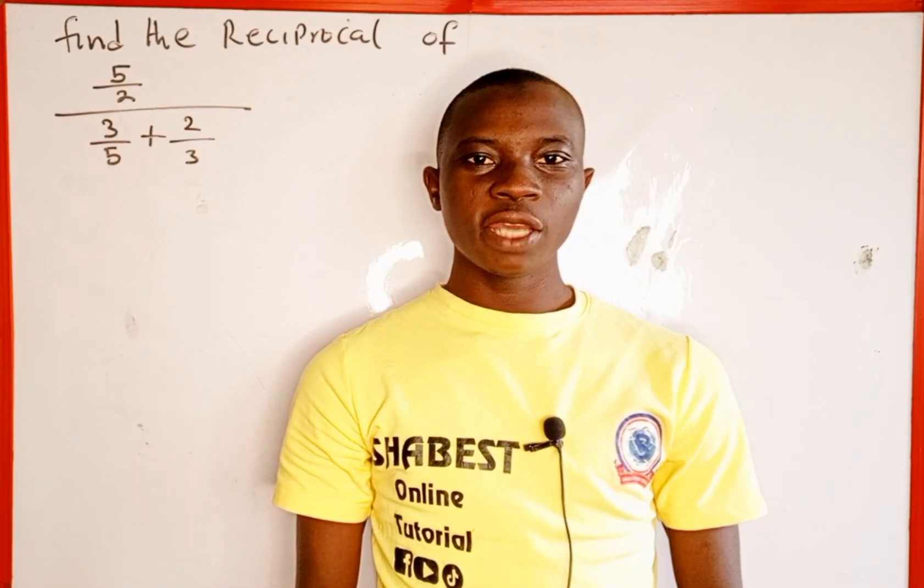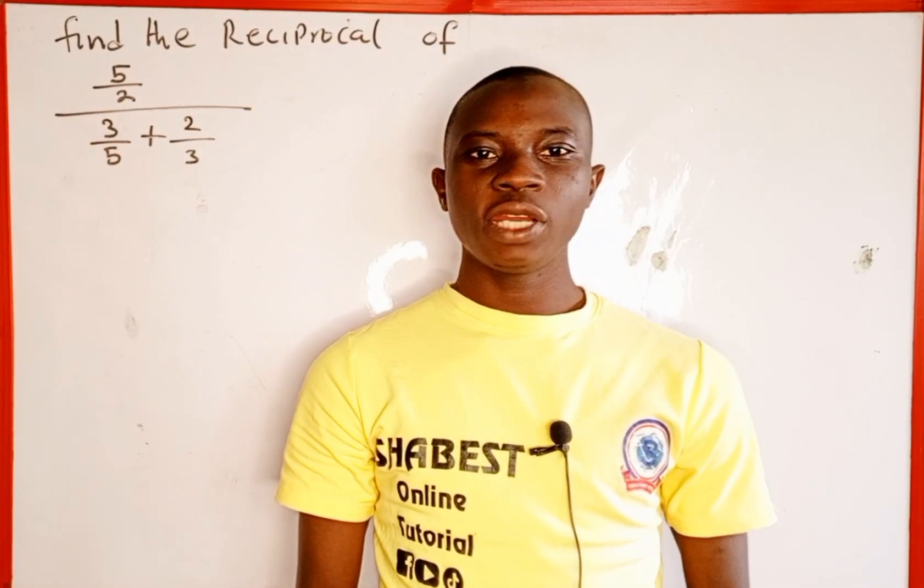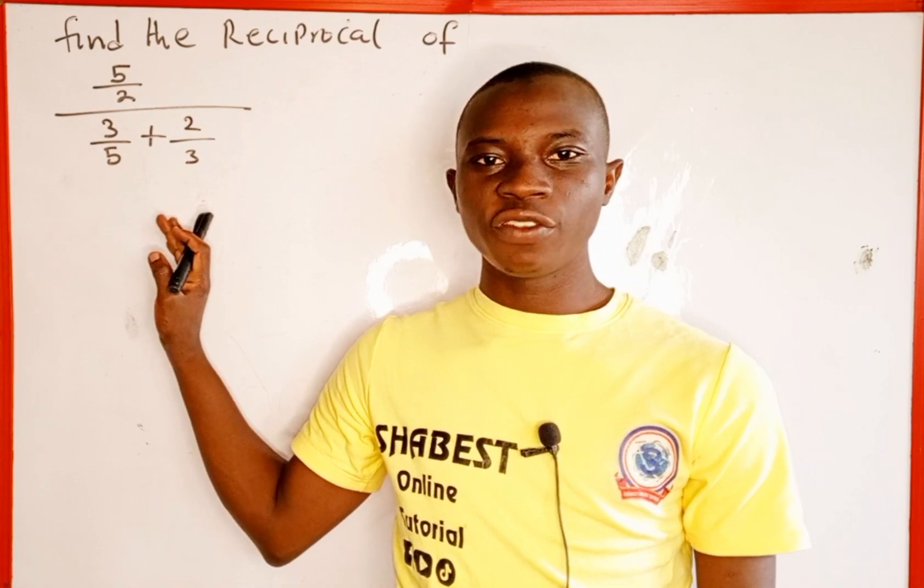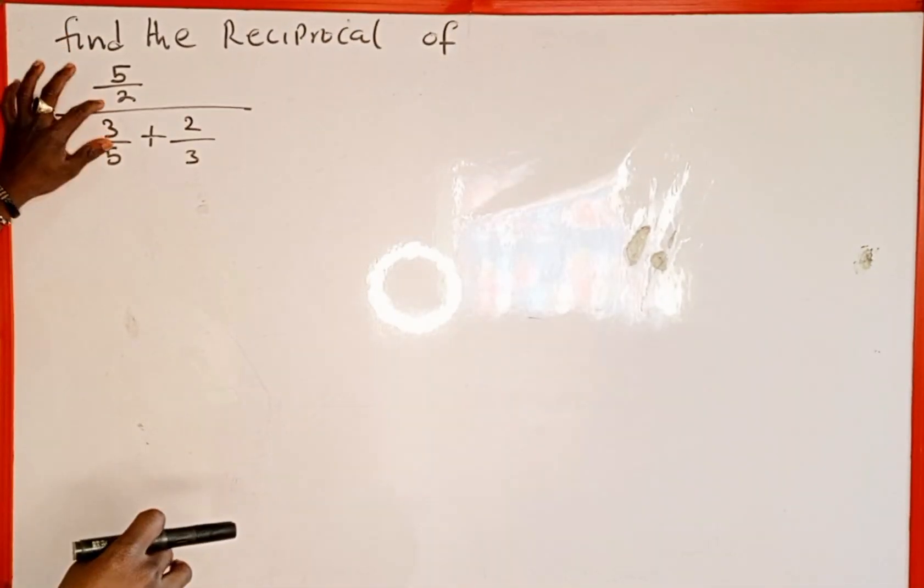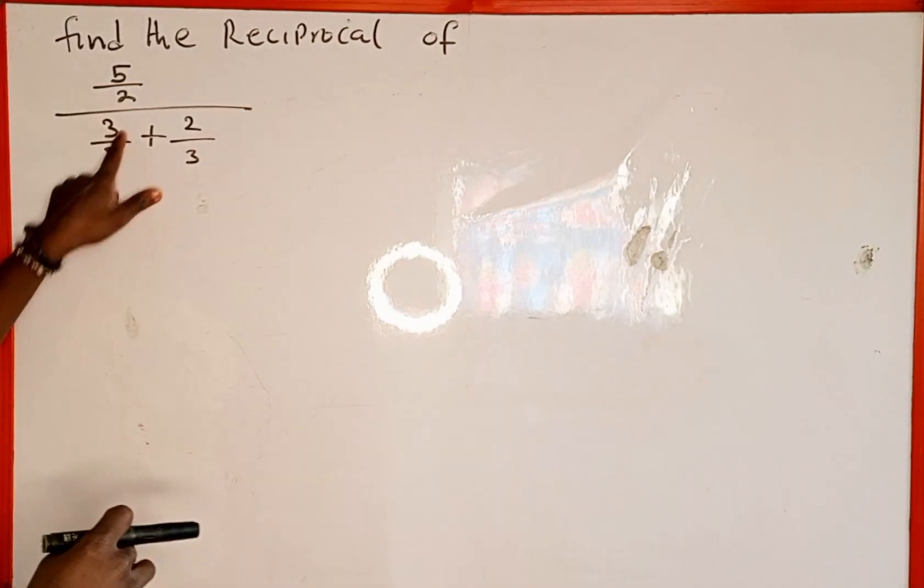Hello everyone, you are welcome back to Shabest's Online Tutorial. In today's tutorial, we're going to learn how to find the reciprocal of this fraction. The given fractional expression is 5 over 2 divided by 3 over 5 plus 2 over 3.